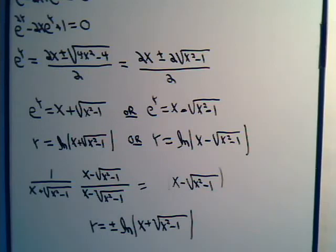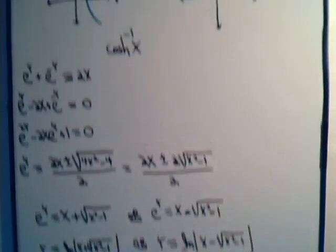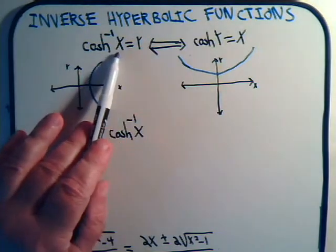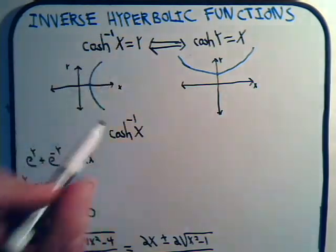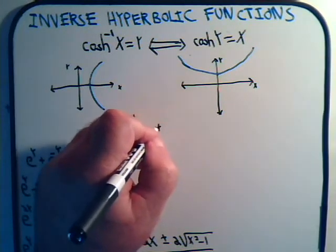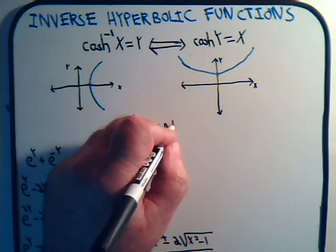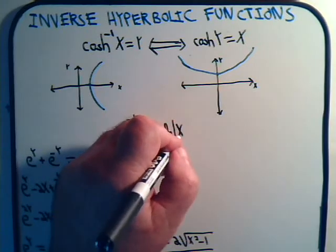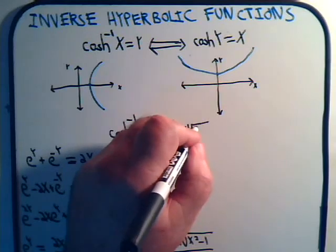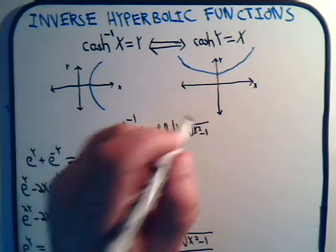Let's write it up here. What is y? y is the inverse hyperbolic cosine of x, so this will equal plus or minus the natural log of x plus the square root of x squared minus 1.